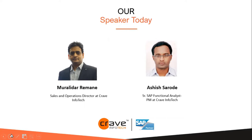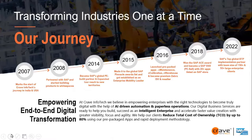We also have Ashish with us. He is Senior SAP Functional Analyst PM at Crave InfoTech with 10 plus years of industry experience. He is handling various automation projects for different industries like pharma, manufacturing, oil and gas, for the end-to-end implementation of plant maintenance mobile solutions. Without further ado, I would like to hand over to Murali to start with the presentation. Over to you, Murali.